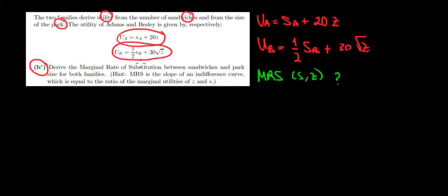Now we have to derive the MRS between sandwiches and park size for both families. The MRS is going to be the slope of an indifference curve which is equal to the ratio of the marginal utilities of Z and S.